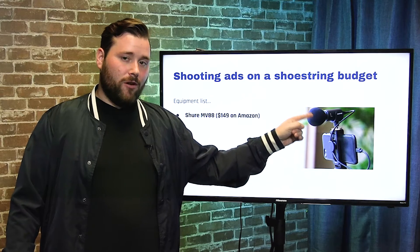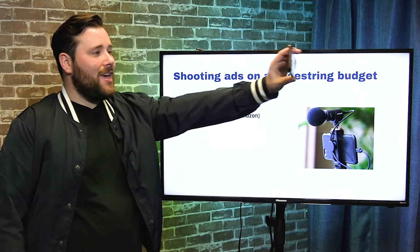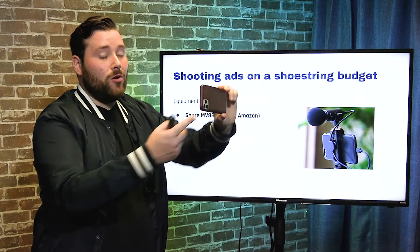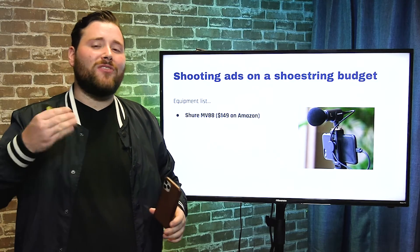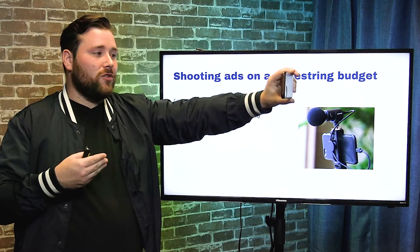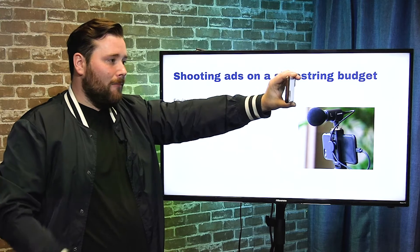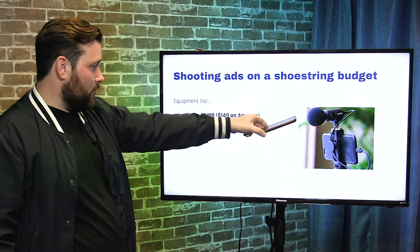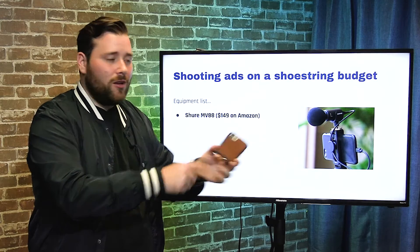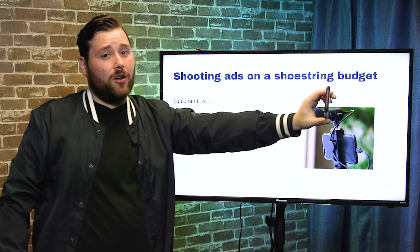I'd highly recommend getting a microphone for your phone camera. Keep the phone about arm's length away — not too far — because audio is more important than video quality. People have to hear what you're saying. If they can't hear it, nothing else matters. At arm's length you get good audio, but if you get a microphone like this Shure MVA8 — $149 on Amazon — it picks up even better audio and allows a bit more distance.